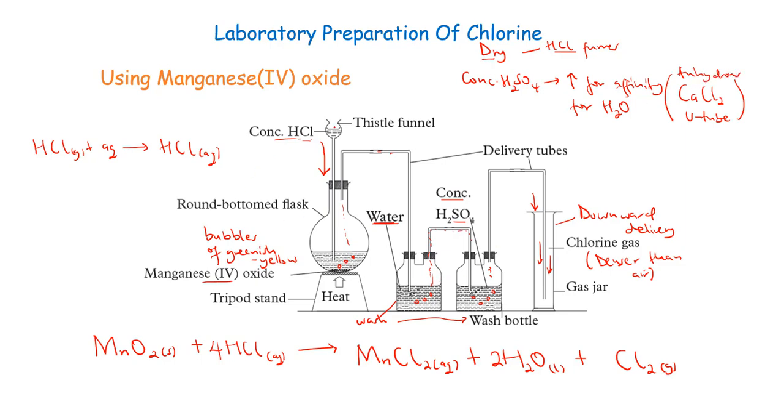So basically, this is the setup in the lab. You will need these equipments. You will need some slight warming because our manganese(IV) oxide is not as oxidizing as the second counterpart we shall see. There are many ways of preparing chlorine, but we shall mainly look at two: manganese(IV) oxide and potassium permanganate. So this is a brief introduction to how we can prepare chlorine in the lab, specifically dry chlorine.